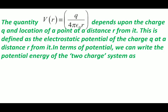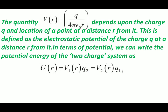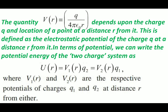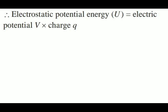Now you will be able to understand the concept of potential difference. The quantity in the bracket is defined as the electrostatic potential of charge q at a distance r from it. In terms of potential, we can write the potential energy of a two-charge system as U(r) equals V1(r) times q2, which equals V2(r) times q1, where V1 and V2 are the respective potentials of charges q1 and q2 at distance r from either. Therefore, electrostatic potential energy U equals electric potential V times charge q.